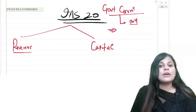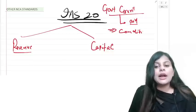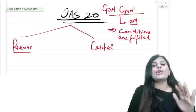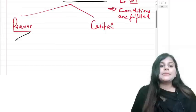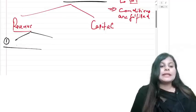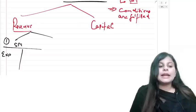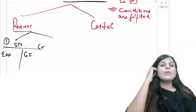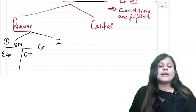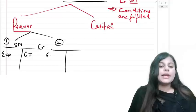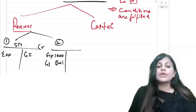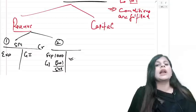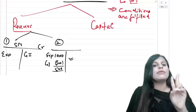For revenue grants, there are two presentation methods. Method one: show the expense on the debit side and grant income separately on the credit side in the statement of profit and loss. Method two: show a net expense — for example, if the expense is 1,000 and the grant is 500, show a net expense of 500, rather than disclosing grant income separately.